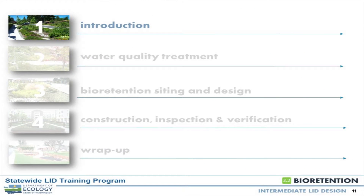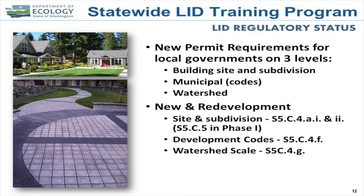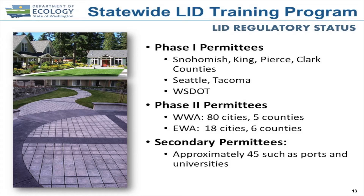By way of background, we have new permit requirements coming online soon. They break down into three areas: building site and subdivision regulation, municipal code, and then watershed scale. That third bullet is something relatively new — a few jurisdictions like Woodinville, Redmond, and Bothell are thinking about and applying the low impact development approach at a watershed scale. We've got phase one permittees involved, and a lot more phase two and secondary permittees, with phase one phasing in first and phase two following.